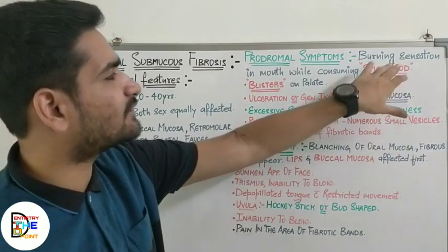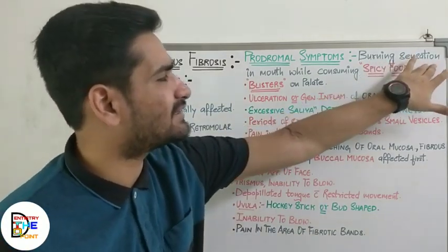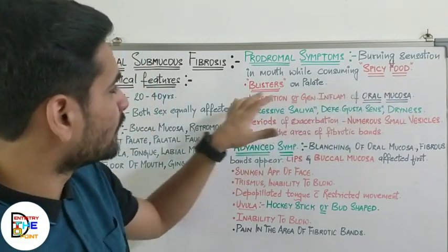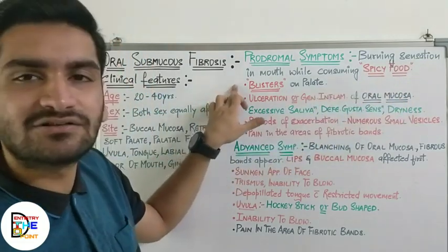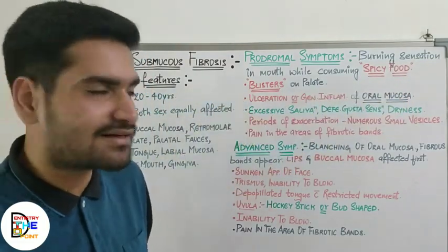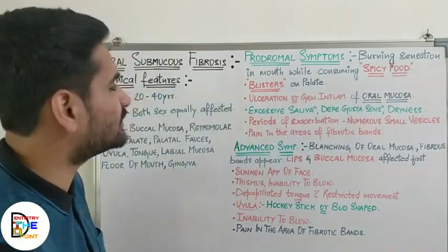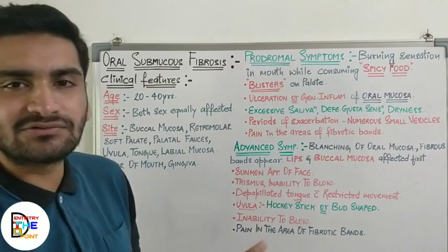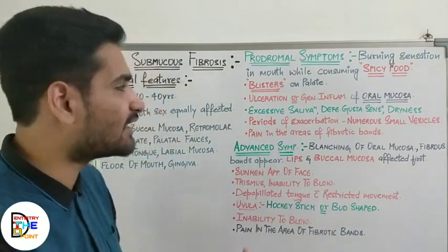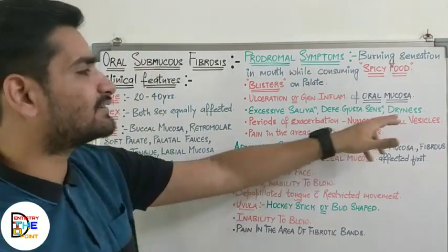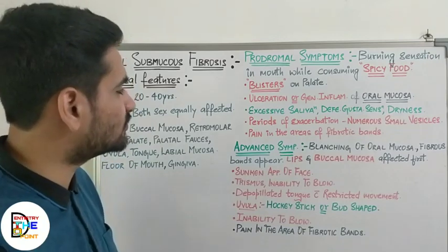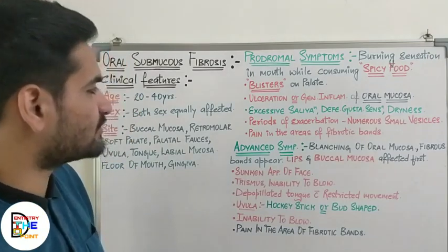To revise the prodromal symptoms: burning sensation on consuming spicy food, blisters on the palate, ulceration or generalized inflammation, excessive salivation, defective gustatory sensation, dryness of mouth, numerous small vesicles with a period of three months to one year, and pain in the fibrotic bands.